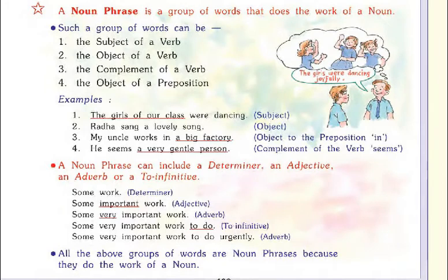Now see a noun phrase. What is a noun phrase? It is a group of words that does the work of a noun. Such a group of words can be the subject of a verb, the object of a verb, the complement of a verb, and the object of a preposition. For example: 'the girls of our class' — 'girls' is a noun, and when it includes some other words, it is a noun phrase. 'The girls of our class were dancing' — so it is used as a subject here.